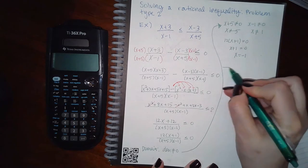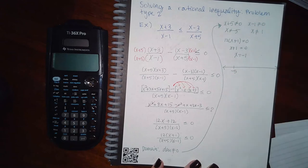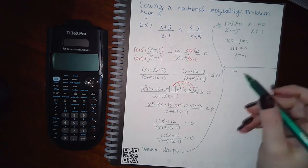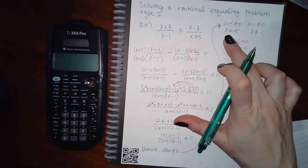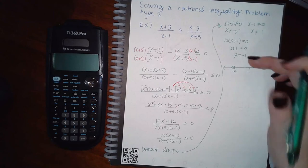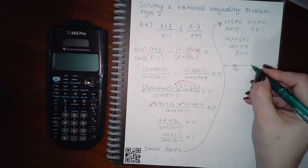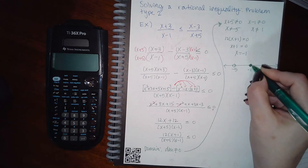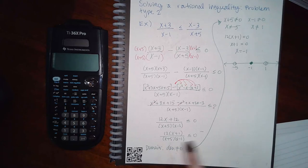Let's plot this on a number line. To the far left we have negative 5, in the middle negative 1, and to the right positive 1. Since x cannot equal negative 5, there's a hole there. Since x cannot equal positive 1, there's a hole there for the domain. For x equals negative 1, the inequality says less than or equal to, so this one should have a solid dot. We're looking for the negative regions, and we plug test points into the factored version.